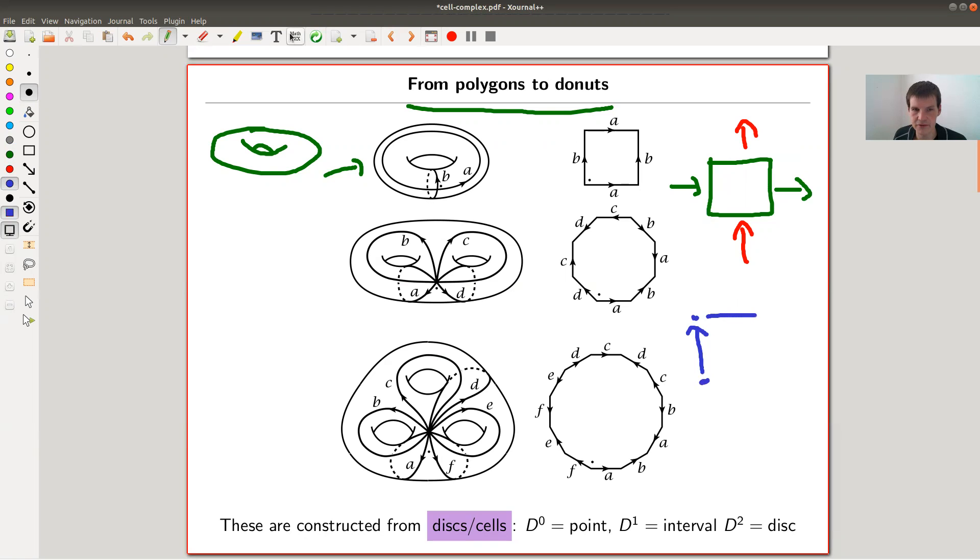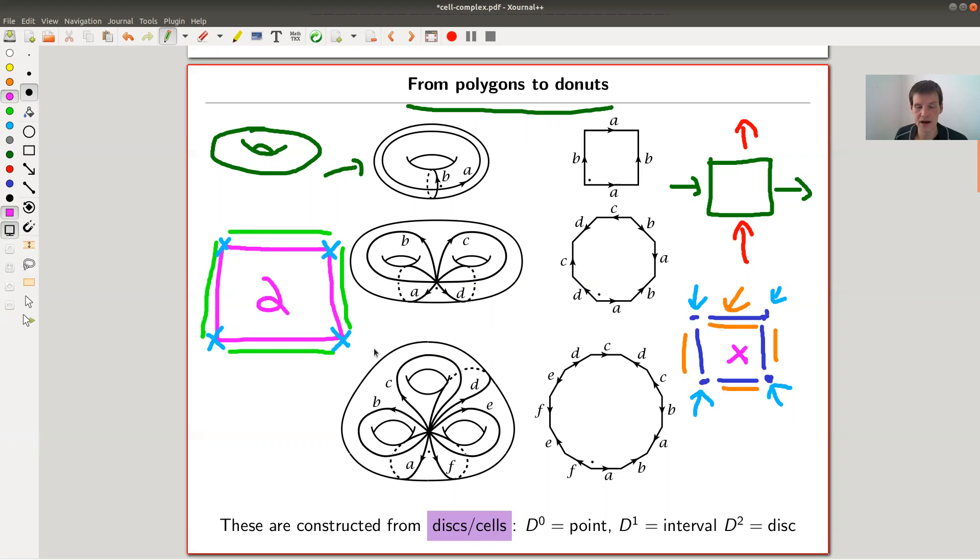What I'd like to stress is I can construct the square by using a lot of one cells, one dimensional objects, actually four of them, and zero dimensional objects, which I call zero cells, also four of them. You glue them together in a very nice way, and you glue in the middle a two dimensional space, which is a two cell. That's what I'd like to think.